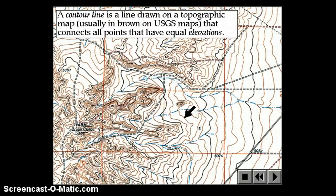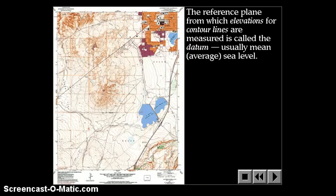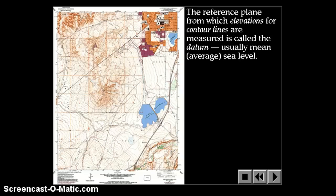A contour line is a line drawn on a topographic map, usually in brown on USGS maps, that connect all points that have equal elevations. The reference plane from which elevations for contour lines are measured is called the datum, usually its average sea level.